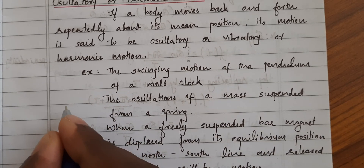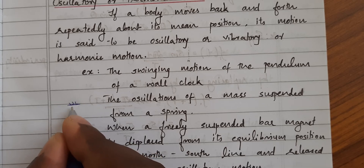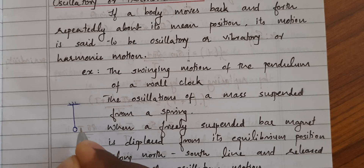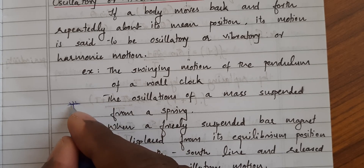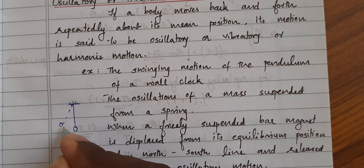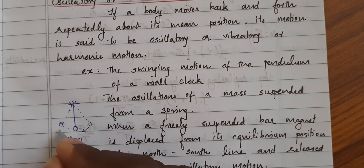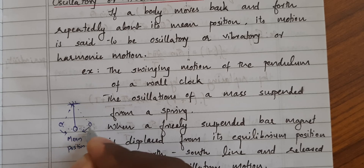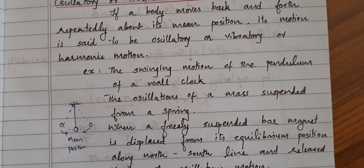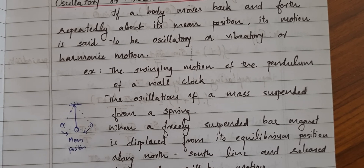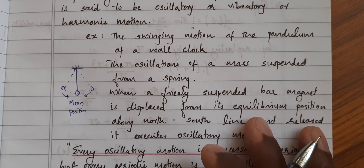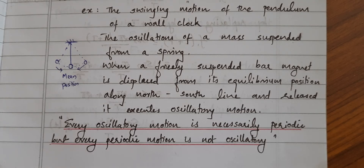Suppose you take a simple pendulum. This is the pendulum, and this point is called its mean position — where it is at rest. Take it to one side and release it; it goes to the other side, reaches there, comes back, and goes forward again. So about this mean position there is a to-and-fro motion — that's oscillatory motion. All oscillatory motions are periodic because they repeat after a particular interval of time, called the time period. So every oscillatory motion is periodic, but that doesn't mean every periodic motion is oscillatory.